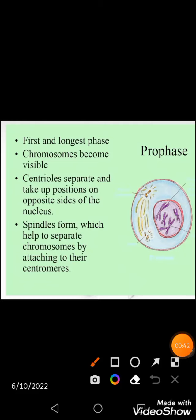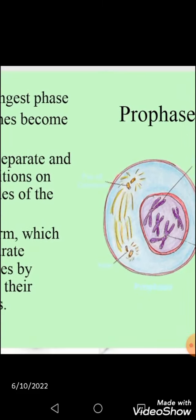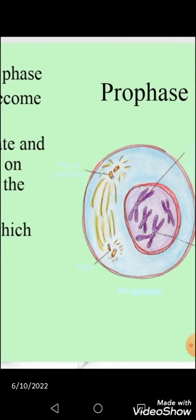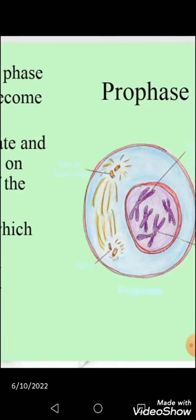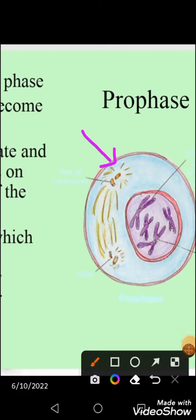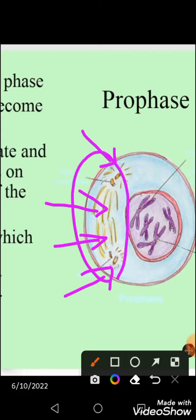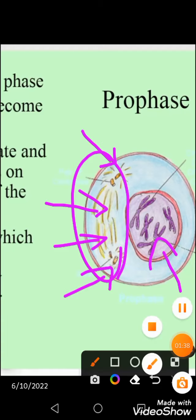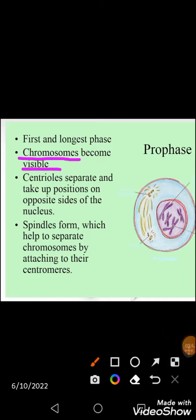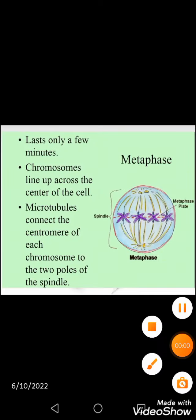In prophase, the first phase of mitosis, chromosomes become visible. The nucleolus decreases in size and disappears. The centrioles move towards the opposite poles of the cell, and microtubules arrange themselves to form the mitotic spindle. So to summarize: chromosomes become visible, centrioles move to opposite poles, and the mitotic spindle forms.